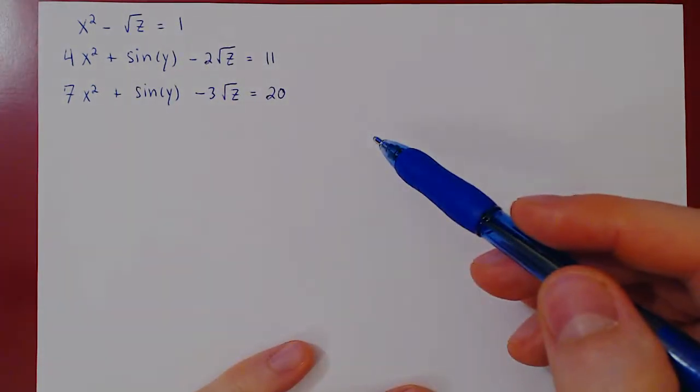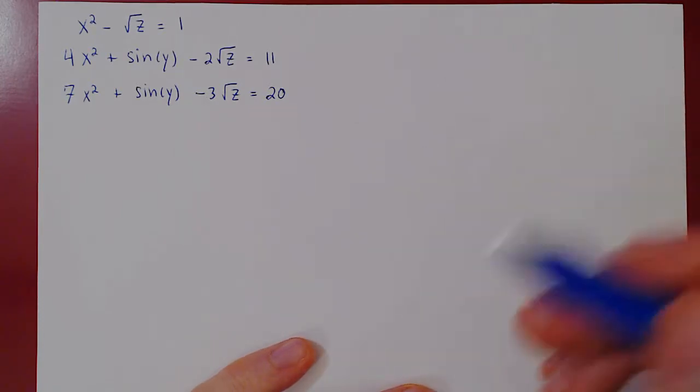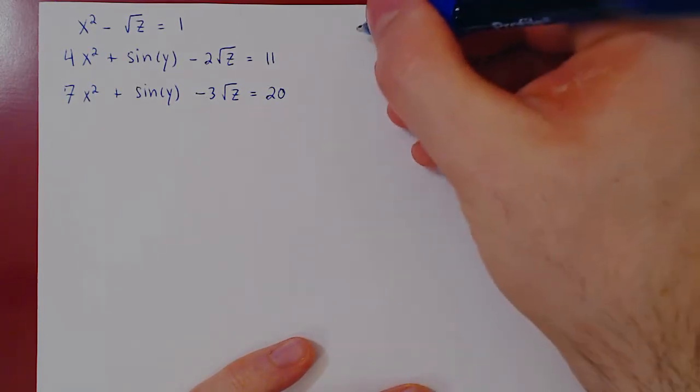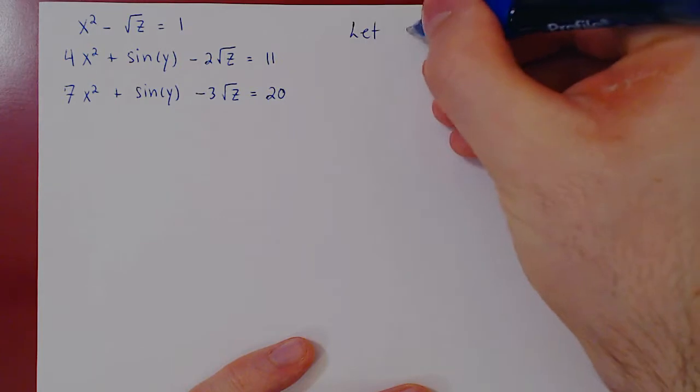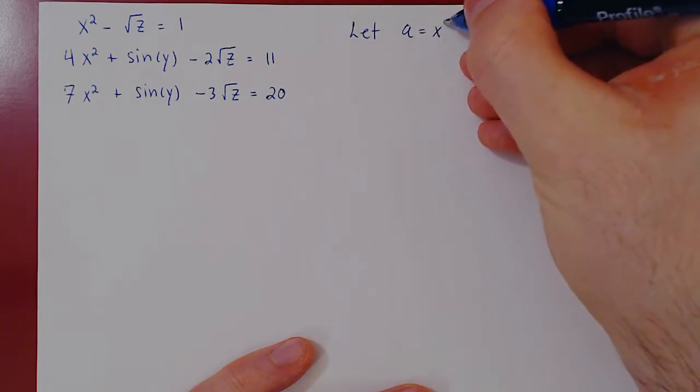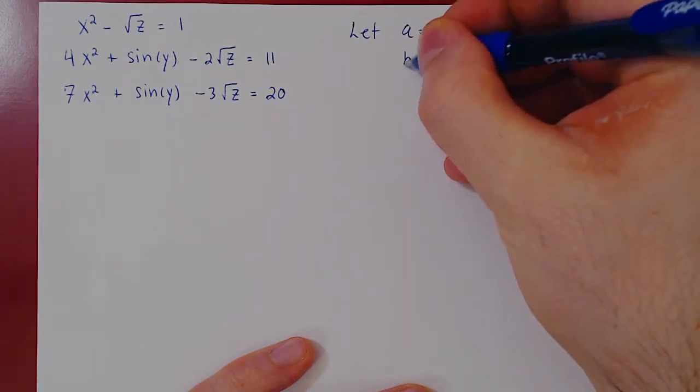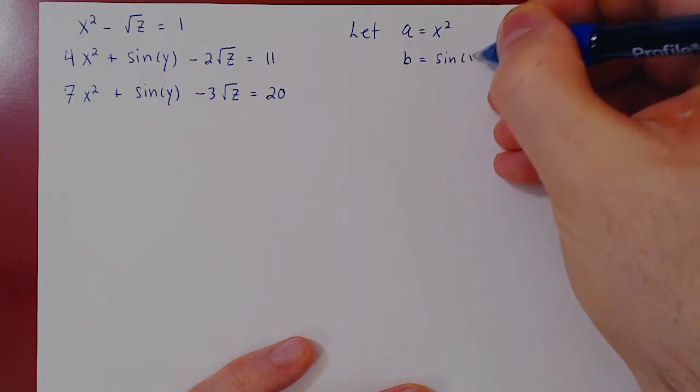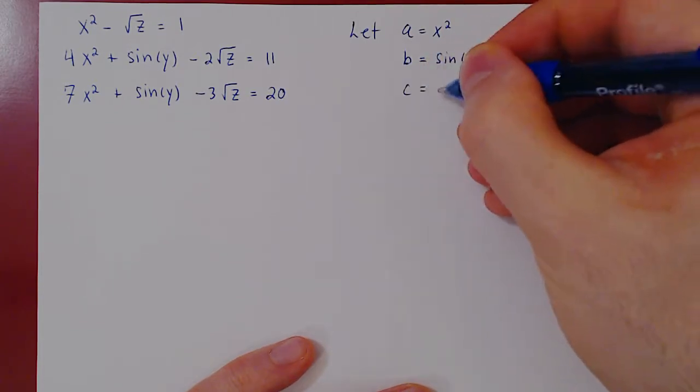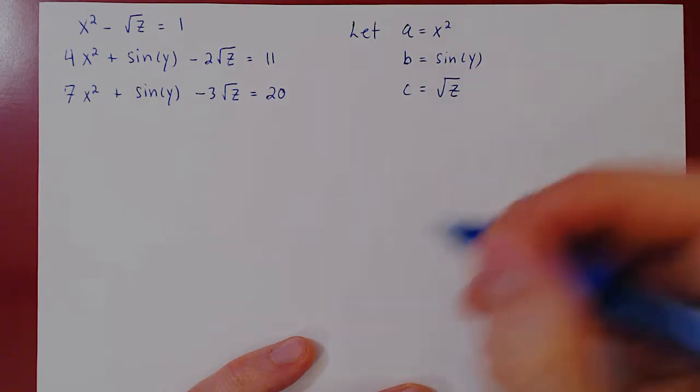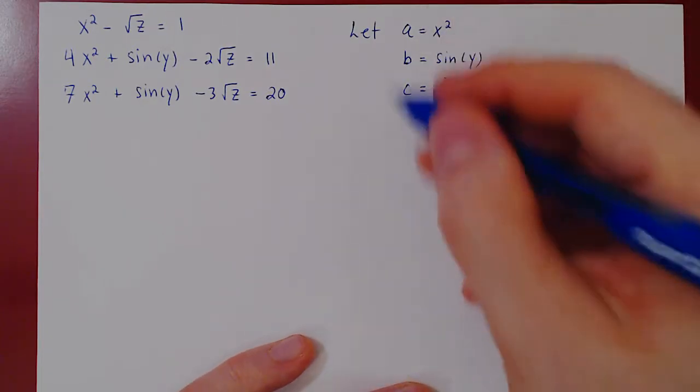Well, in this case, the answer is yes, and all we can do is make a change of variables. We can let a be x squared, b equals sine of y, and c equals root of z. Let's see what happens after this change of variables.